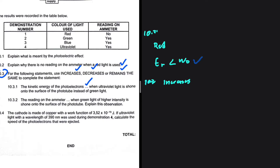Let me show you why. We know that energy equals the work function plus E_k max. If we make E_k max the subject of the formula, we get energy minus the work function. So if we use ultraviolet light of a higher frequency, then the kinetic energy is going to increase. That is 10.3.1.